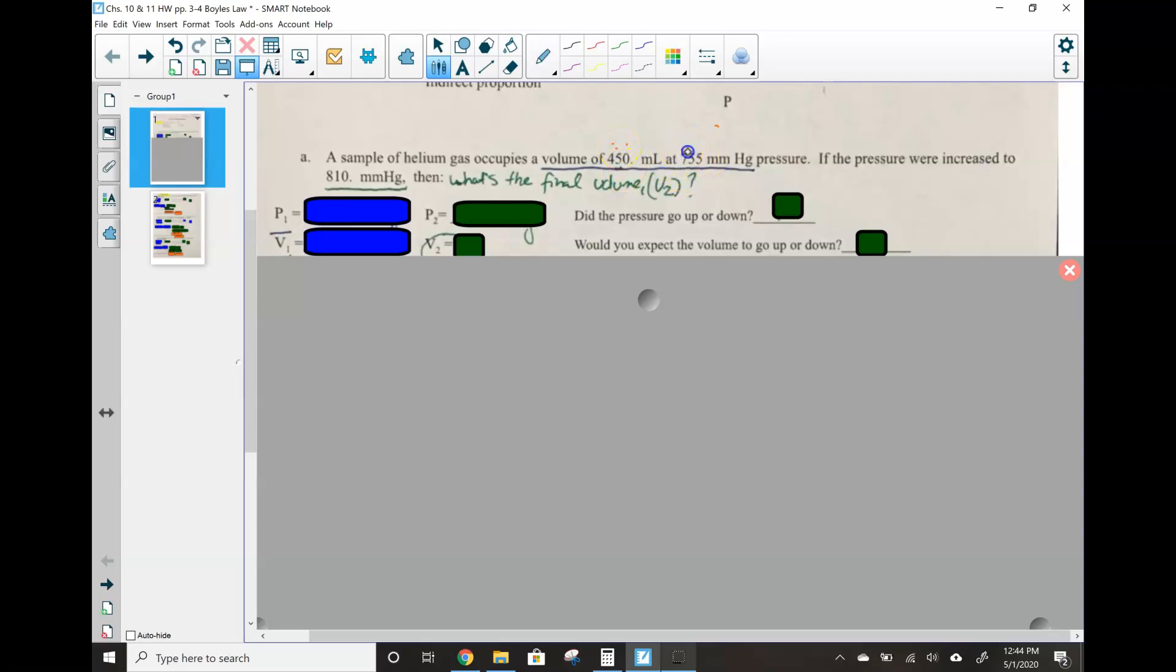At 755, we've got one, two, three sig figs there too, millimeters of mercury of pressure. If the pressure were increased to 810, making that last zero significant there, then what's the final volume, V2? So when we look at this, we want to first kind of diagram the problem. So the initial system, volume of 450, that's our V1. Our initial pressure, that's our P1. Pressure is increased, so now our second pressure is here. We're looking for what's the final volume, V2. Oh, got to keep my color coding straight here. That should be P2.